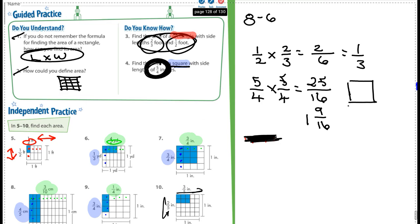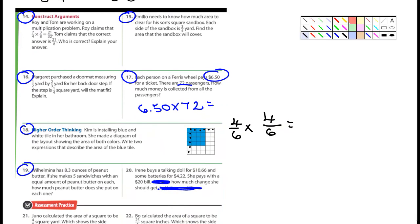Let's look at the next page here for your homework. I want you guys to go ahead and do, for your homework, 14, 15, 16, 17, 18, 19, and 20. And I want you to do 20. So let's look at 14 really quick. It says, Roy and Tom are working on a multiplication problem. Roy claims that seven-fourths times three-eighths is 21 over 32. Tom claims that the correct answer is 21 over 8. Who is correct? There's your first question. Explain your answer. You guys can do that one because somebody's wrong.